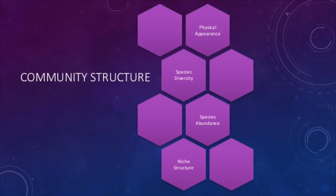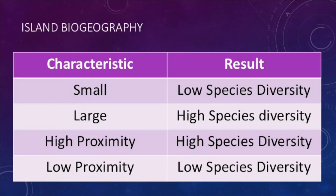There are many different types of physical appearances for communities — they may be terrestrial or marine. Species diversity is determined by the latitude of the terrestrial community, the depth of a marine community, and the pollution in both. Islands are the exception to this, as they are restricted both in size and by proximity to other organisms.